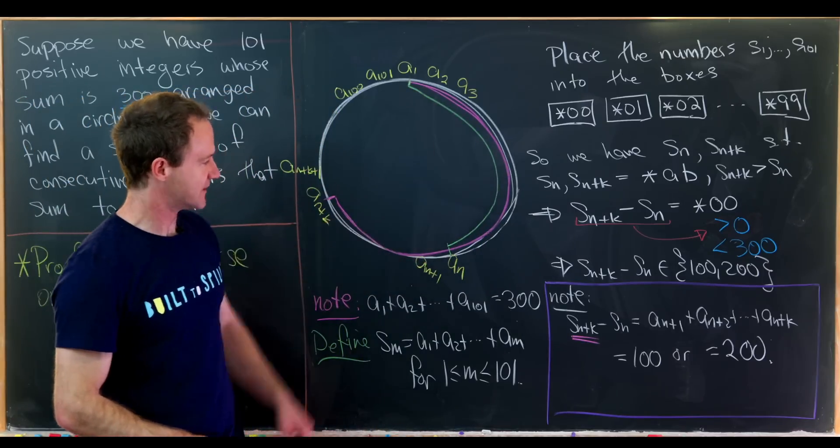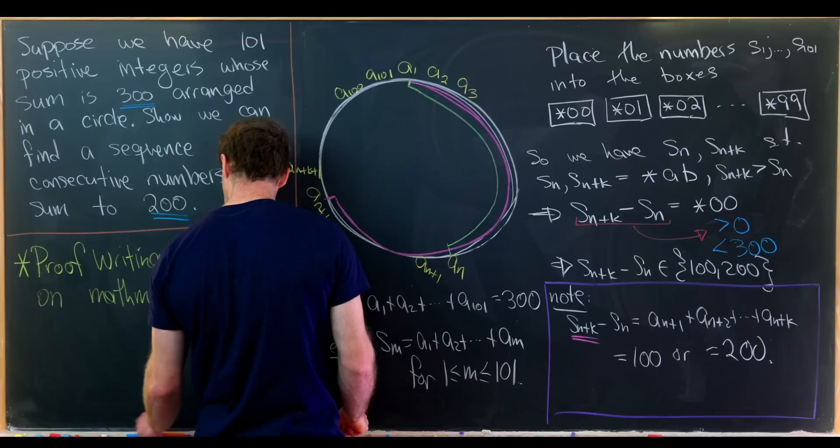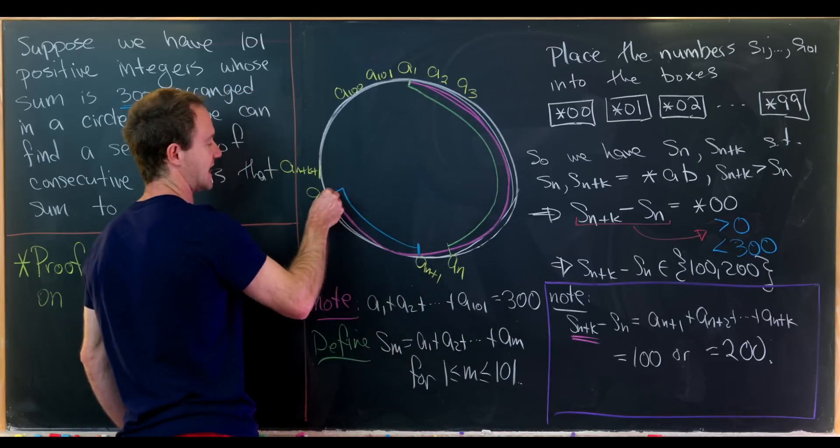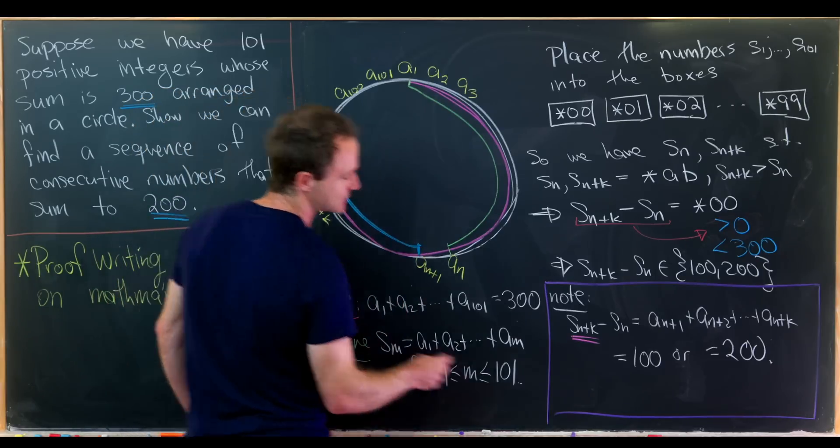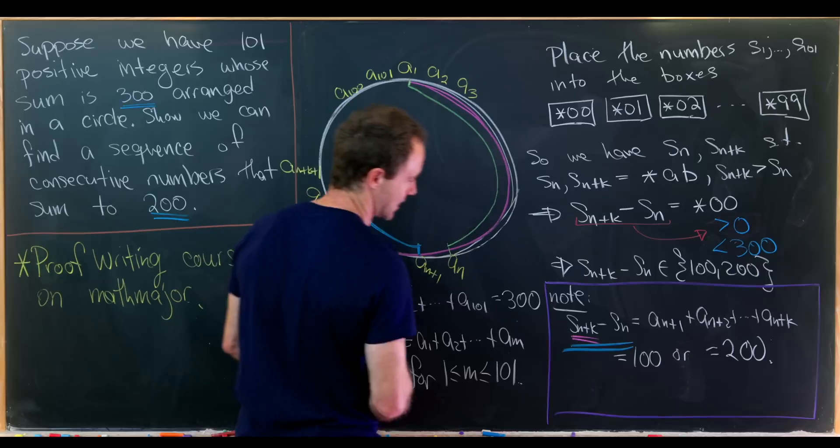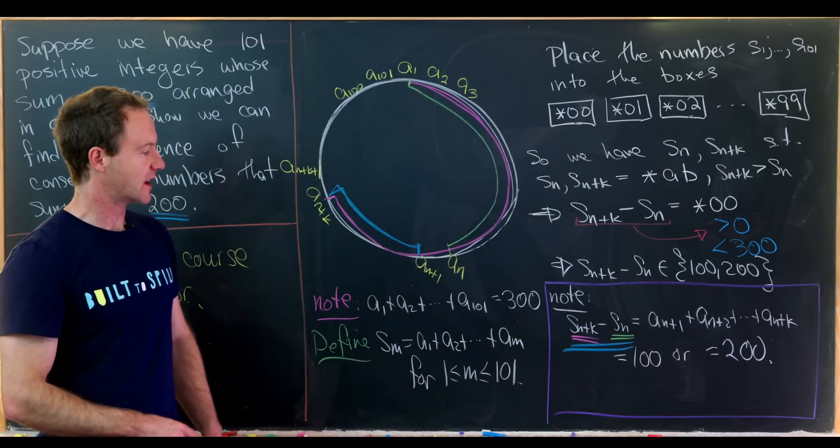But now if you take the difference in these, you're subtracting this overlap and that leaves us with the arc from an plus 1 to an plus k. So that's this entire difference right here. And then let's carry on our color coding here. I should have underlined that in green.